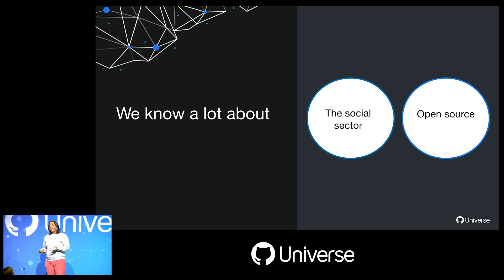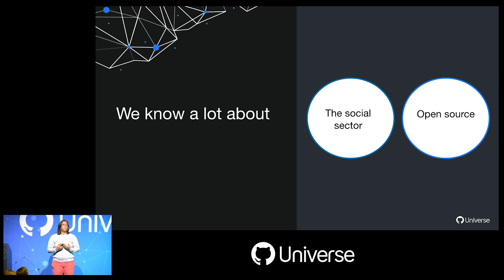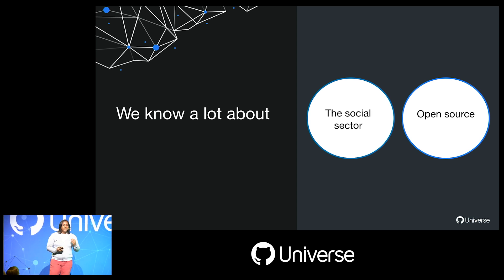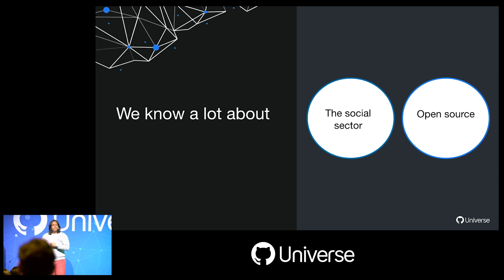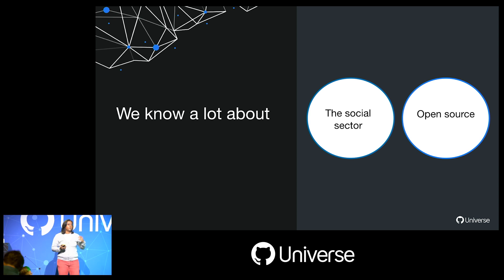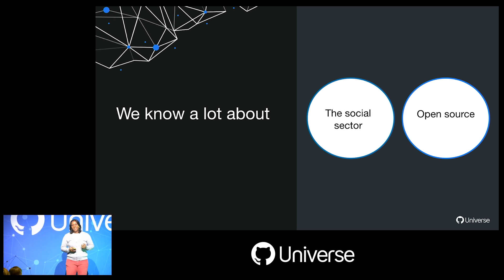We have a lot of capacity and a great network. If we have a knowledge gap in the social sector, we know who to call, who to ask, and how to fill those gaps. So it's safe to say we know a lot about the social sector. And at GitHub, we know about open source — it's kind of our thing.